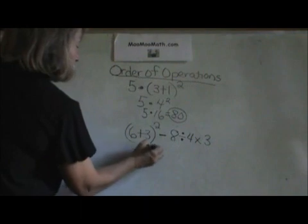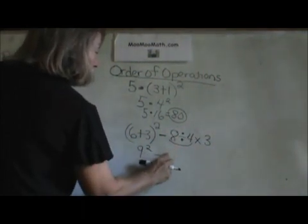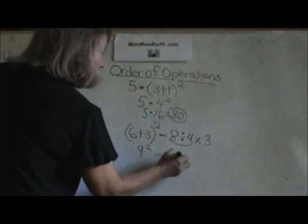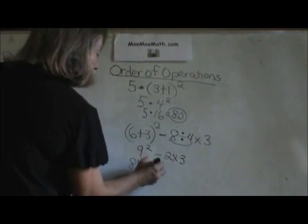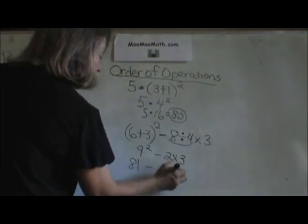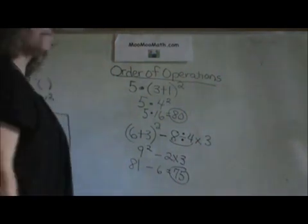6 plus 3 is 9. Bring down 8 divided by 4 is 2 times 3 is 81 minus 6 is 75. There are two example problems.